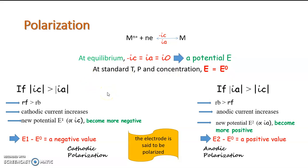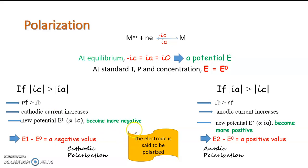Then, if we are supplying some extra current from an external source, the equilibrium gets disturbed either in this way or in this way. If the cathodic process increases by the extra current, the rate of deposition becomes faster and the equilibrium potential will shift to a more negative value.